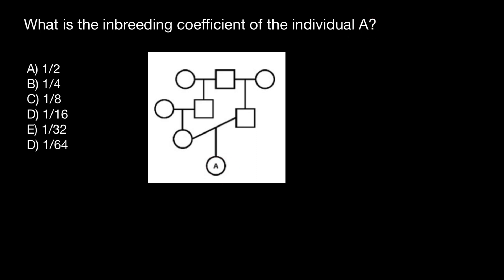Here is individual A. We see that individual A's mother and father are genetically related, because this individual here is the father of the father of individual A, and the grandfather of the mother of individual A. That means that the mother and father of individual A are related — so this is consanguineous mating.